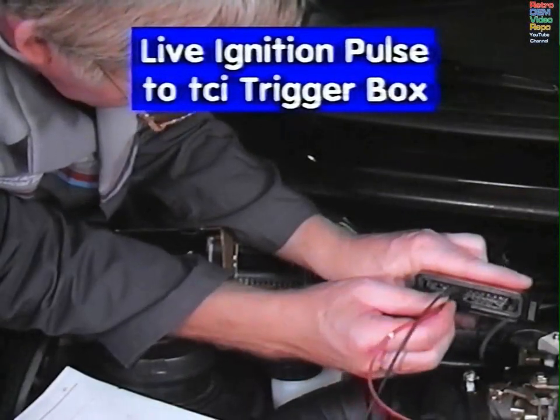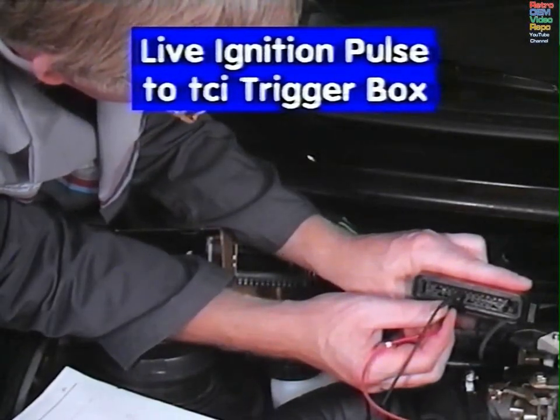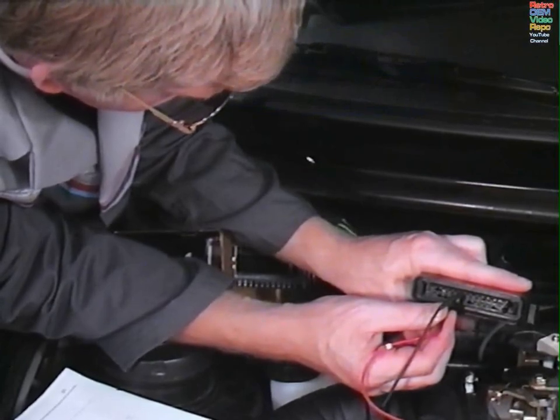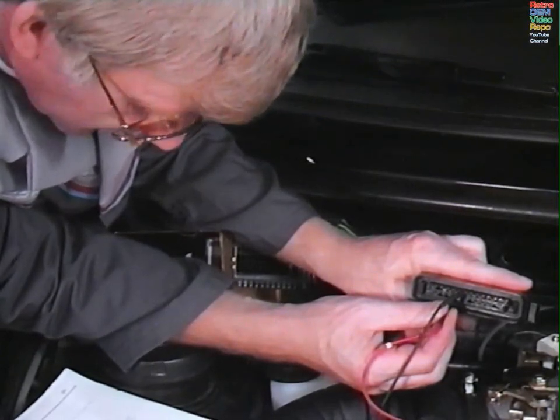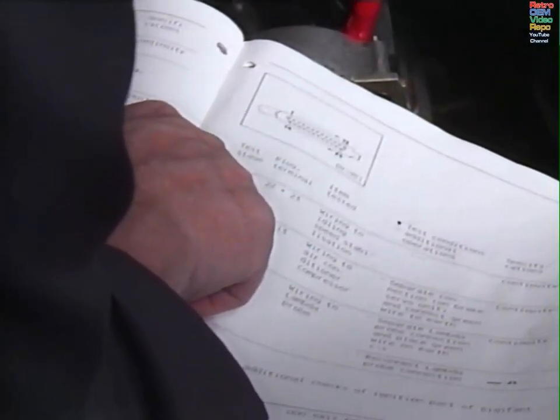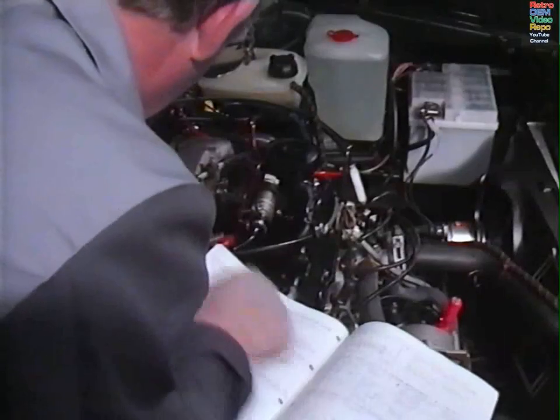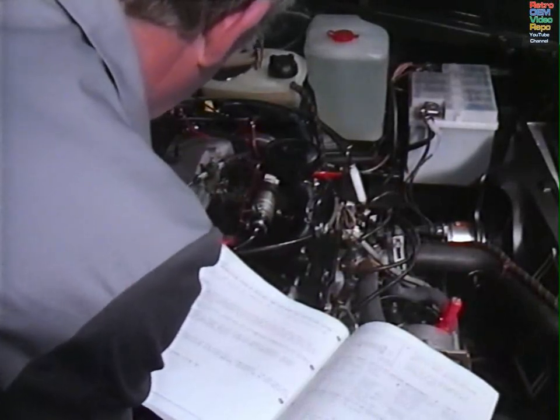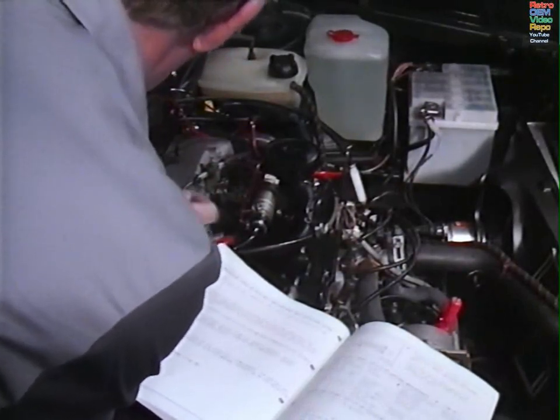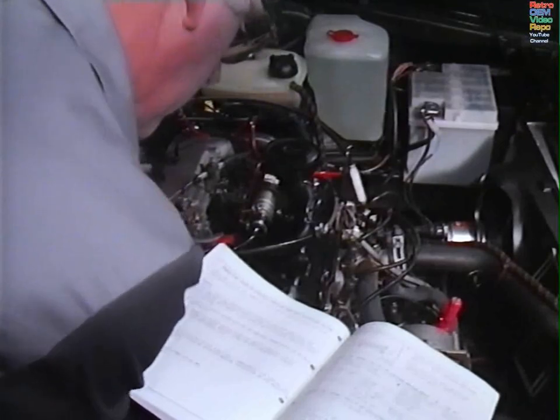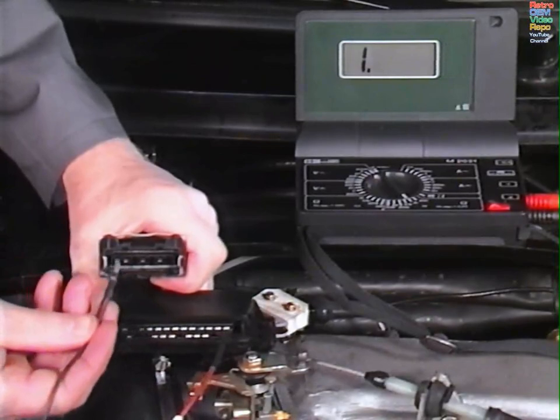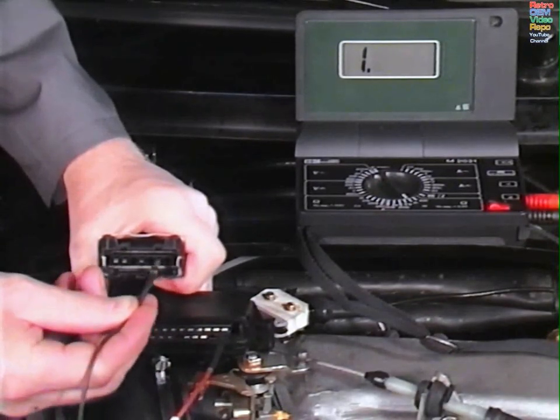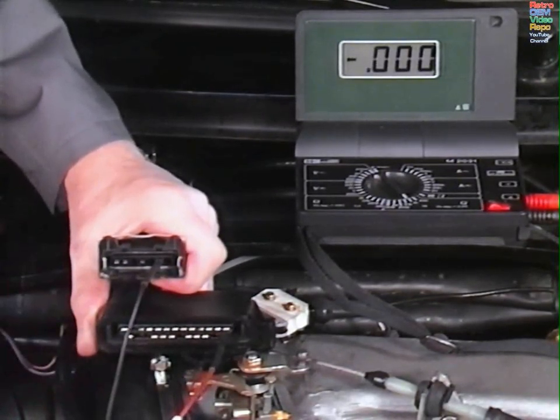Live ignition pulse to TCI trigger box. Because the switch on and switch off signals are now being supplied from the main brain unit, all we can do at this stage is to check the continuity of the wire from the control unit to the trigger box. Set the multimeter to 2 kilo ohms scale. Bridge terminal 25 on the control box to terminal 6 on the removed plug of the trigger box and check for continuity. A figure of 0 ohms should appear.